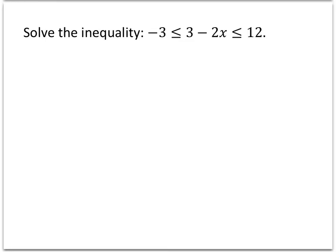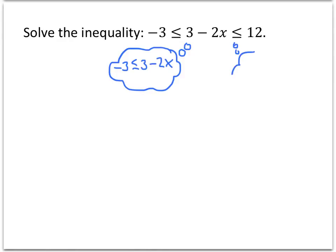Notice that we have two inequalities happening at the same time here. What we want to think about is what we would do if we had both of those inequalities separately — negative 3 less than or equal to 3 minus 2x, and 3 minus 2x less than or equal to 12. We're going to solve this compound inequality by solving both of those inequalities simultaneously.